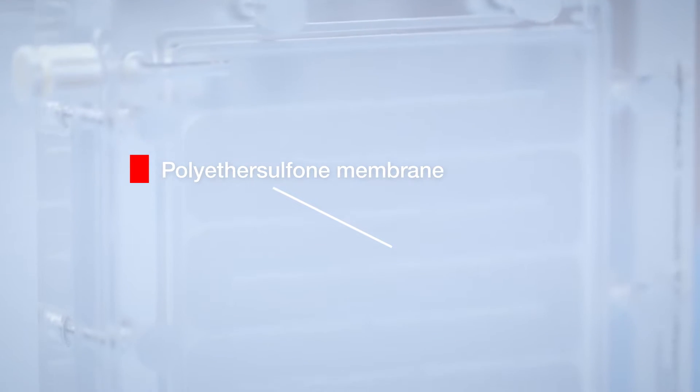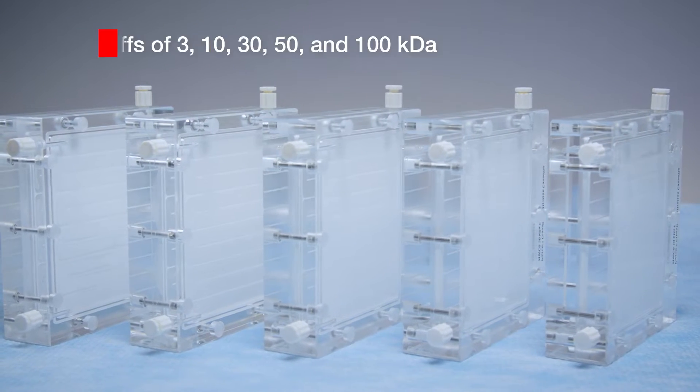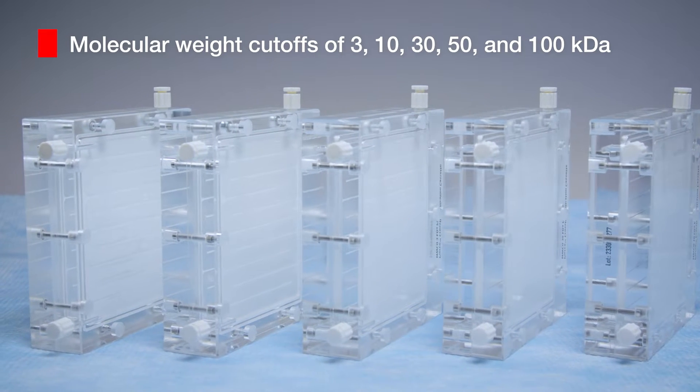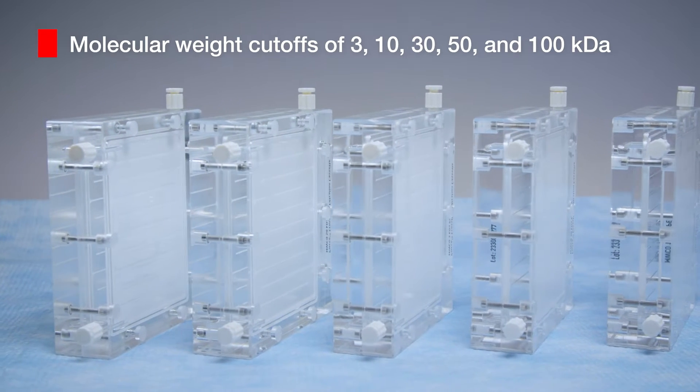The cassettes contain a polyethersulfone membrane and are available in five distinct molecular weight cutoffs of 3, 10, 30, 50, and 100 kilodaltons.